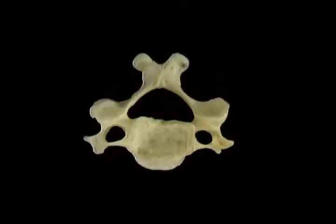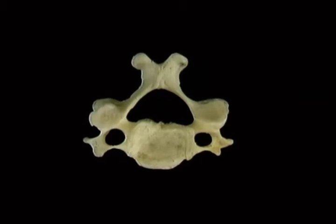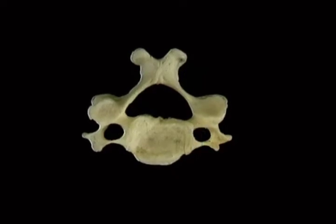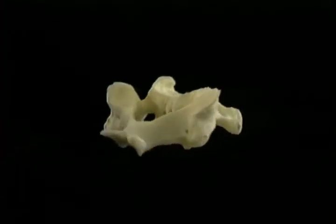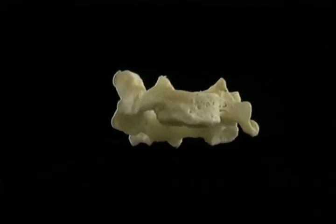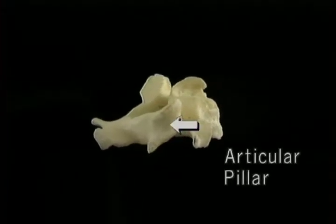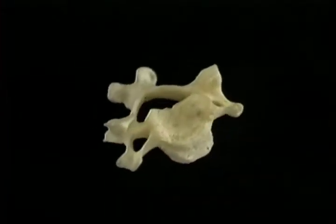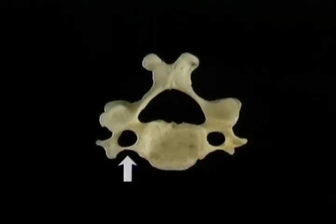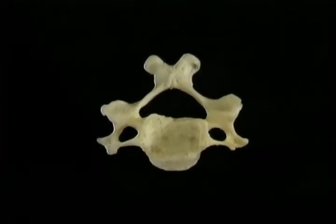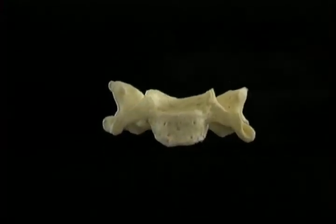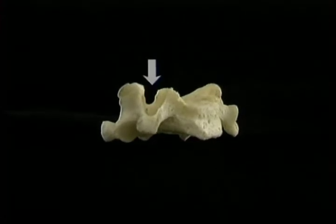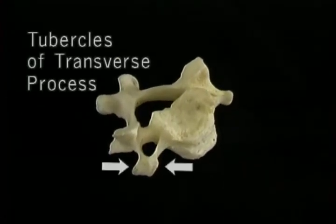The vertebral foramen is large and triangular. The neural arch is formed mainly by the two straight laminae. The pedicles are very short. The spinous process is short and ends in a double point. The upper articular facets face upward and inward; the lower ones face downward and forward. The mass of bone between the articular facets is called the articular pillar. The transverse processes arise from the side of the body and also from the articular pillar. The transverse process of a cervical vertebra has a hole in it — the transverse foramen — through which the vertebral artery passes. It ends in two tubercles, an anterior and a posterior, where the scalene muscles attach.